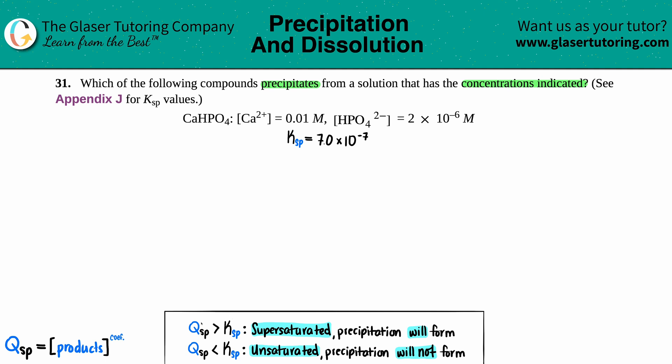The only way we can know if something's going to precipitate is if we compare the Qsp value we get with the molarities we have currently with the known equilibrium Ksp. If the Q value is greater than the Ksp, that's a supersaturated solution and a precipitate will form.